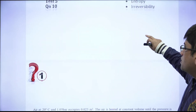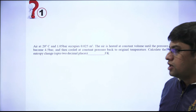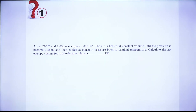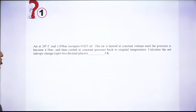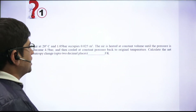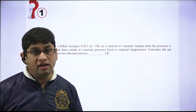Question 1: Air is at 20°C and 1.05 bar pressure with a volume of 0.025 m³. Air is heated at constant volume until pressure becomes 4.5 bar, then cooled at constant pressure back to the original temperature. Calculate the net entropy change accurate to two decimal points. When approaching the problem, think about the PV and TS diagrams to make analysis easier.